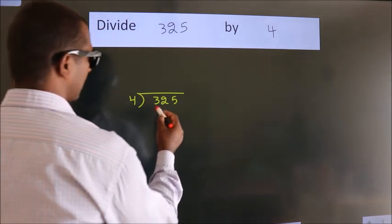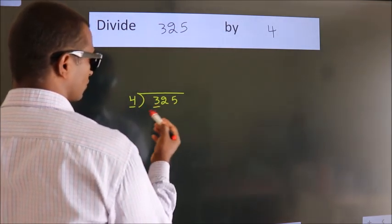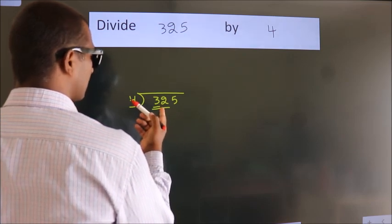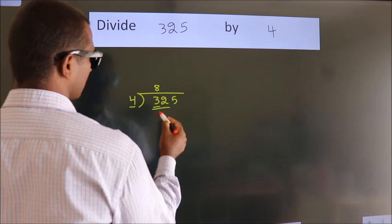Here we have 3, here 4. 3 is smaller than 4, so we should take 2 numbers, 32. When do we get 32? In the 4 table, 4 times 8 equals 32.